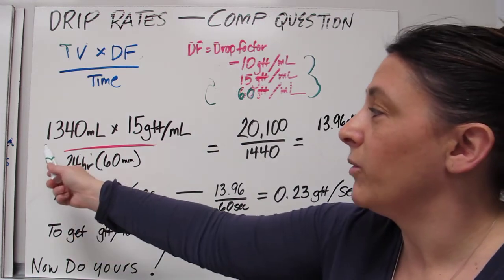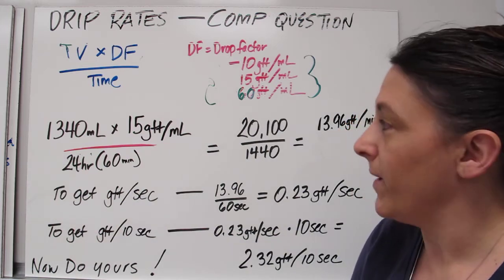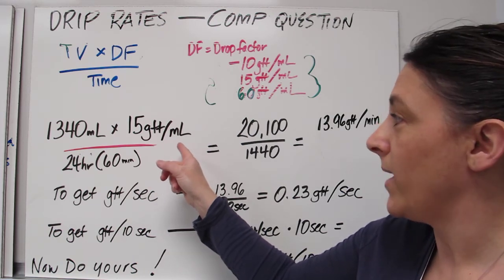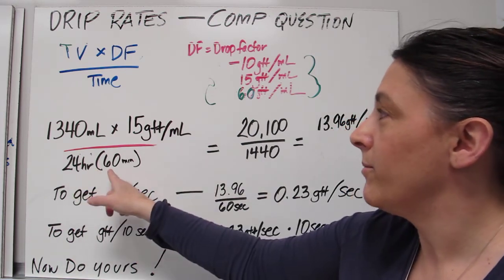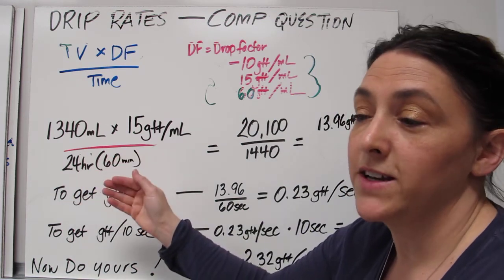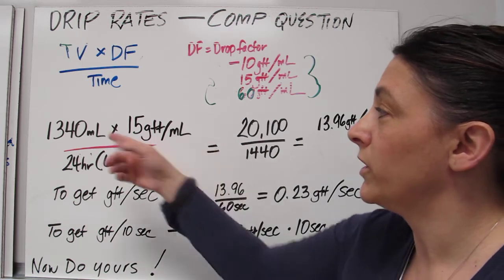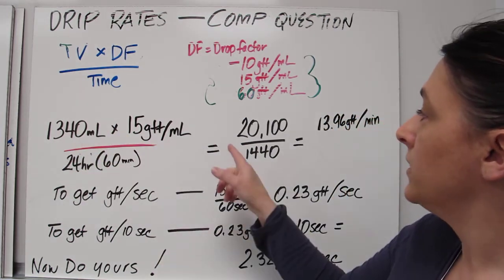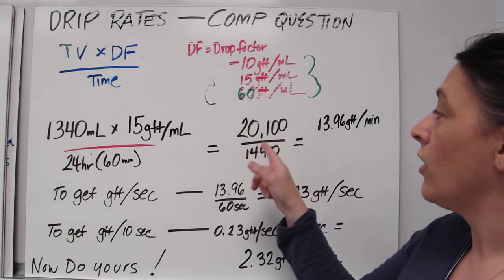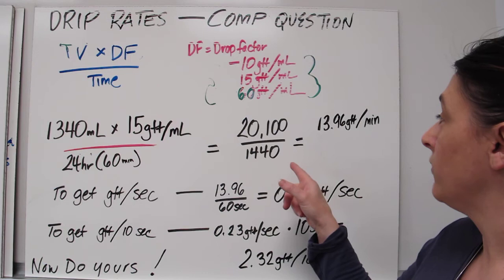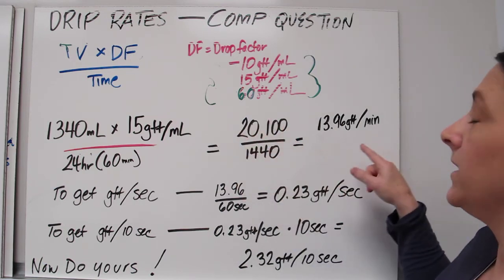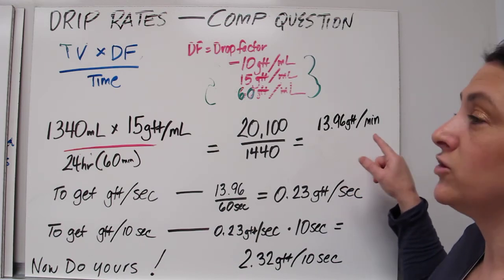So we're going to take our 1,340 mL, and we're going to times it by a 15 drop per mL drop factor. Then we're going to times that by time. So 60 minutes times 24 because we're trying to find out the total amount. We're using the total amount over the 24 hours. So that was going to give us 20,100 over 1,440. We're going to divide those two numbers. So our drip factor for a minute is going to be 13.96 drops per minute.